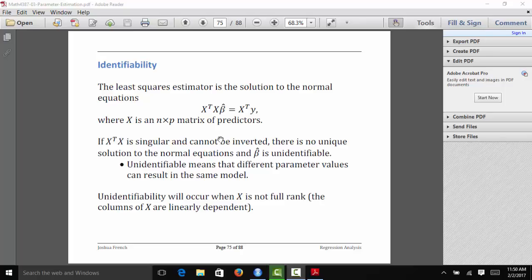Different parameter values can actually result in the exact same model, which means I wouldn't really know what the model is even if I estimated the parameters. So unidentifiability occurs when X does not have full rank. By full rank, what that means is that the columns of X are linearly dependent. At least one column in X is a linear combination of the other columns.